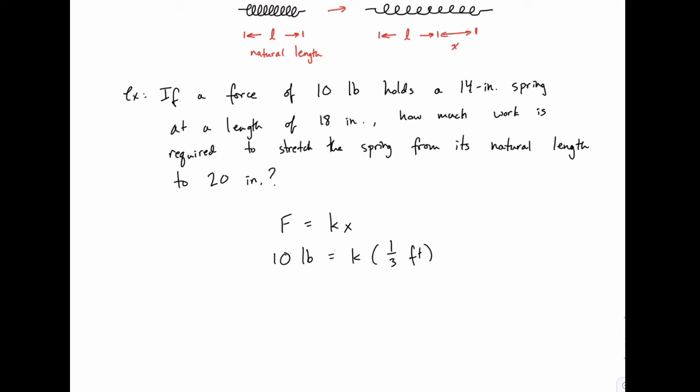And then to solve for k, we'll multiply both sides by 3. So the stiffness k is 30 pounds per foot. So every foot of stretching that's added on to this adds on 30 pounds of force required to hold it at that point.